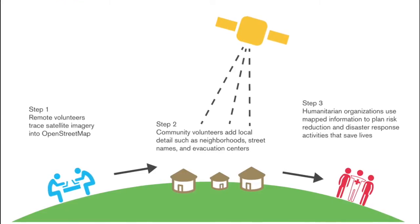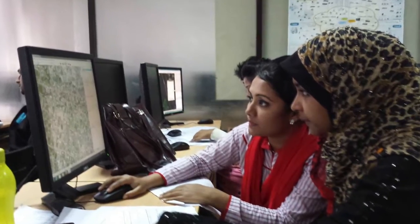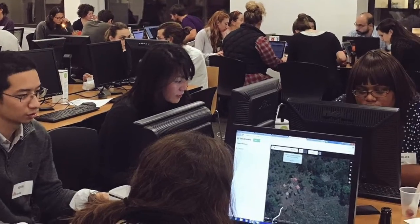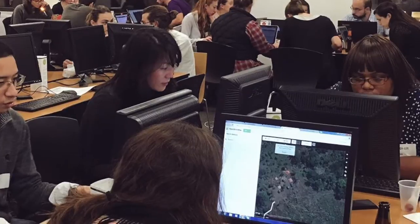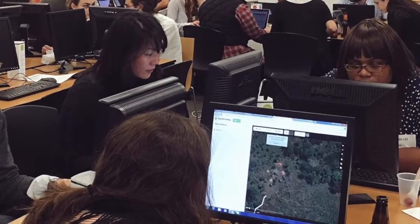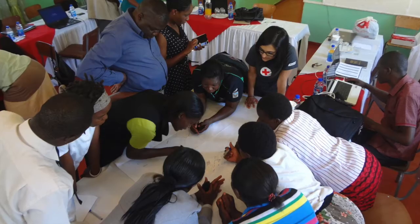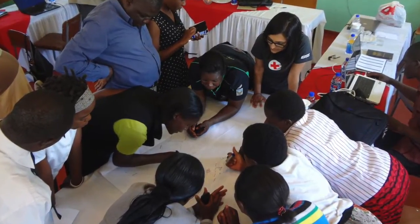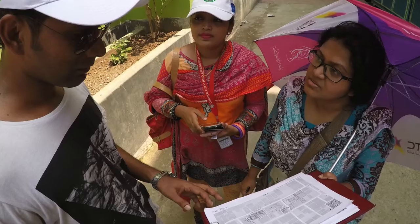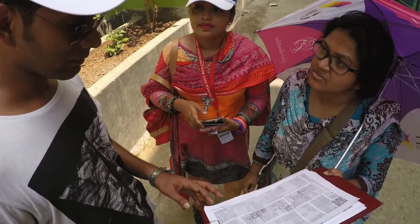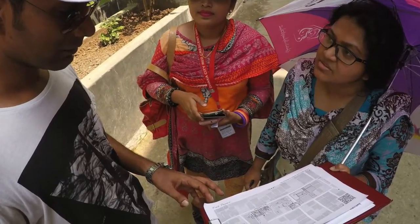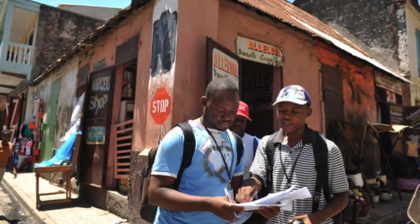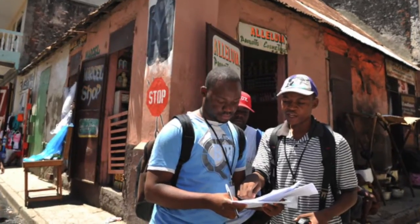At a mapathon, participants work on a mapping task that a humanitarian group has asked for help with by tracing buildings and roads from satellite images. The humanitarian organizations and local groups then use that map data in the field, adding details and creating maps. Having better maps before a crisis will help emergency responders, aid groups, and the communities themselves.